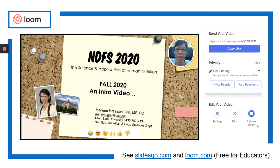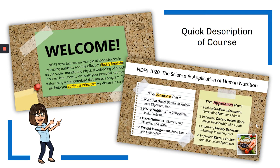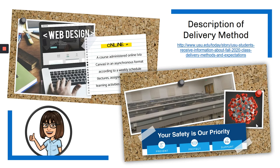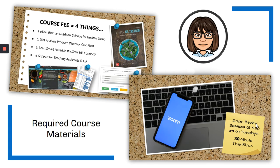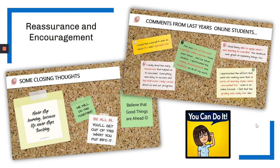I used Loom, which is really similar to Kaltura — it's just a screen capture system — and I walked students through some things to expect. The video included a welcome statement, a quick description of the course, our delivery method and what online would mean for them, the reason why it was switched to online only, some resources to help them navigate that, and a walkthrough of the course materials required. I also let them know I would be offering Zoom sessions — how long they would be and that they would be recorded.